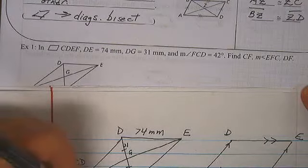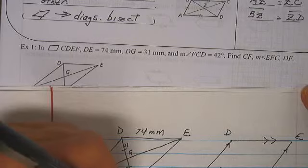We know that when we have parallelograms, the diagonals bisect each other. Bisect means that this guy is going to be equal to this guy. So DF equals 2 times DG.